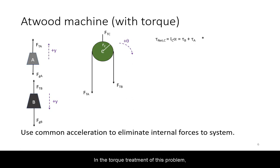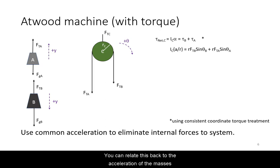In the torque treatment of this problem, you must draw and use the free body diagram of the pulley with its coordinate system. We will apply Newton's second law in its angular form to the pulley. You can relate this back to the acceleration of the masses through the no-slip condition. Pay attention to the direction of each torque.